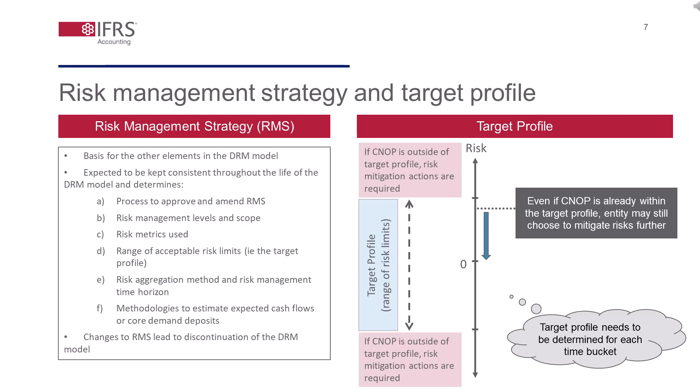Moving on to the target profile, the IASB decided in its November 2021 meeting to refine the definition of the target profile to be a range of possible outcomes rather than a single outcome only. It is defined as the range — i.e. risk limits — within which the current net open risk position can vary while still being consistent with the entity's risk management strategy. If an entity's current net open risk position falls outside of that range, the entity has to take some risk mitigation actions. Some stakeholders have questioned that definition and asked why we were not referring to a residual risk position, i.e. including the designated derivatives, as such a definition would be more intuitive.